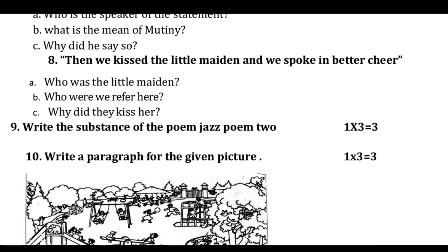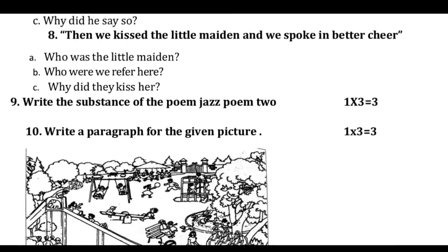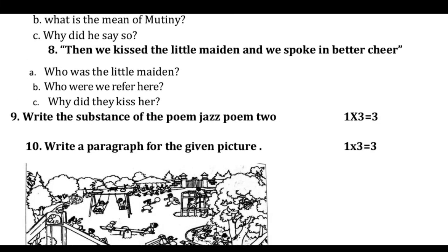From 'Ballad of the Tempest': 'Then we kissed the little maiden and we spake in better cheer.' Who was the little maiden? The little maiden is the captain's daughter. Who does 'we' refer to? 'We' refers to the seamen. Why did they kiss her? Because she filled hope in the seamen, her words gave courage to them, and they reached the harbor safely.